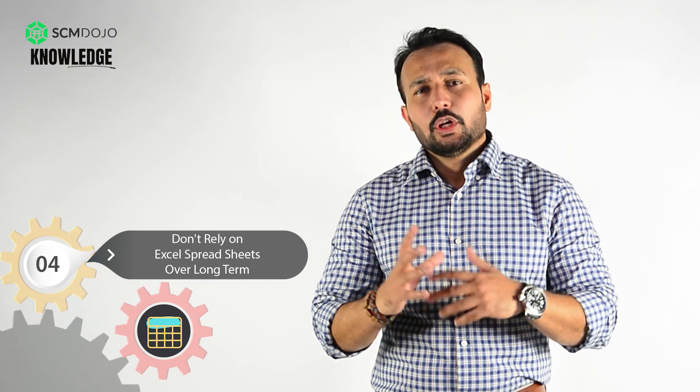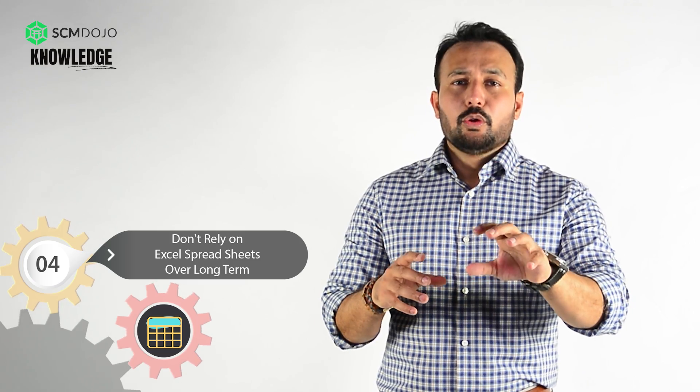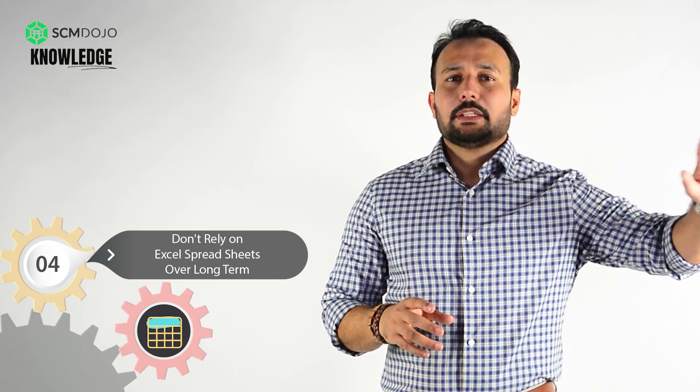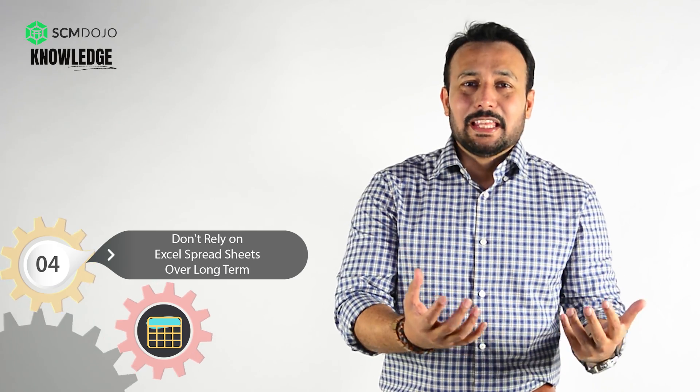Number four: don't rely on Excel spreadsheets long-term. To slightly contradict myself: do start your S&OP process with Excel. Do not go and buy an expensive $300,000 S&OP software when you don't have key processes in place or people don't understand them. Start with Excel — get people used to what data they're looking at, what graphs, what decisions they want to make, and what the process is for arriving at consensus decisions and communication. Once you develop that culture and the spreadsheet gets too heavy, then by all means buy a more advanced software. But when starting your journey, Excel is good enough.